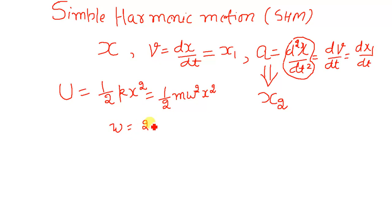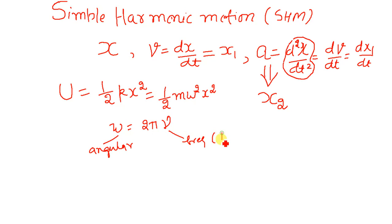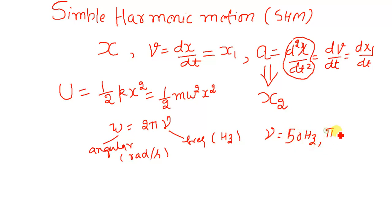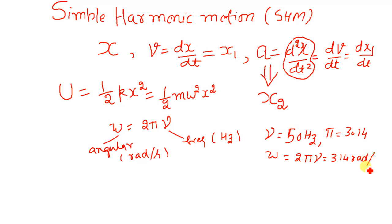ω equals 2πν, where ν is just frequency with units of hertz, and ω has units of radian per second. If I take frequency equal to 50 hertz and π equal to 3.14, then omega becomes equal to 2πν, which gives 314 radian per second.